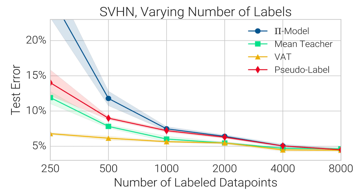Many papers only report semi-supervised learning results for one particular amount of labeled data. We evaluated each approach with varying amounts of labeled data and found a surprising variability in the performance of each method based on the number of labels available.